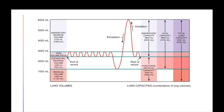Vital capacity is tidal volume plus inspiratory reserve volume plus expiratory reserve volume combined. Vital capacity plus residual volume equals total lung capacity. On the spirometry chart, tidal volume is about 500 mL, normal breathing stays around 3,000 mL, forced exhalation drops to about 2,000 mL, and forced inhalation can reach up to 6,000 mL.